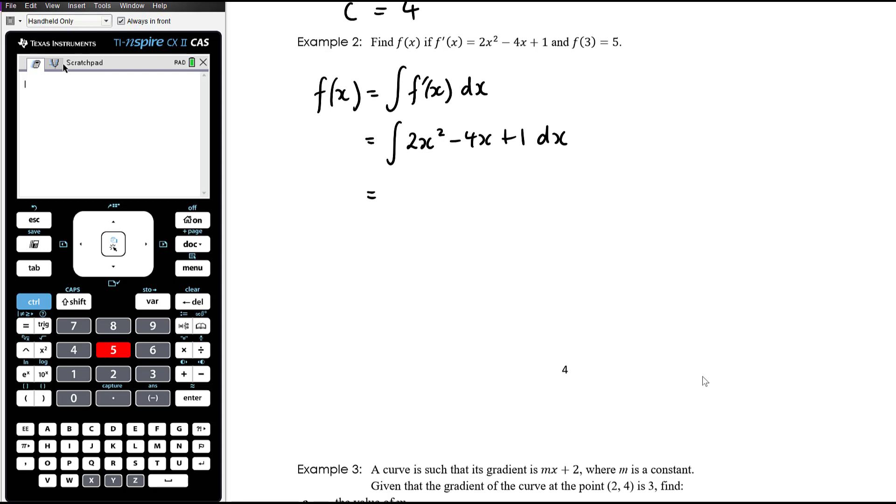Let's anti-differentiate, so that becomes 2x cubed on 3 minus 4x squared on 2, plus 1x, so x and plus c. So you can leave that written like that or you can choose to write it as 2 thirds x cubed if you prefer. 4 on 2 is 2, so that's 2x squared plus x and plus c.